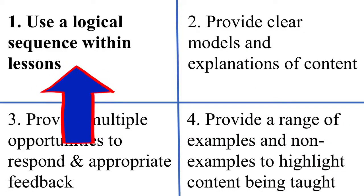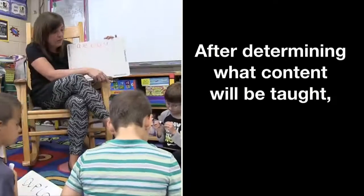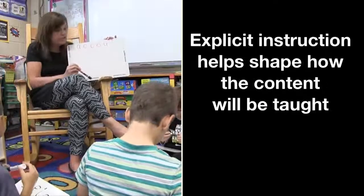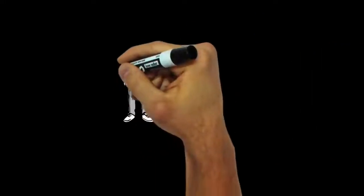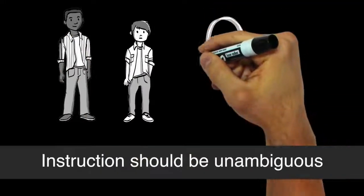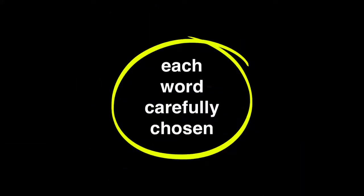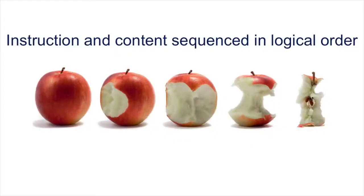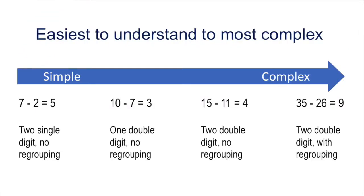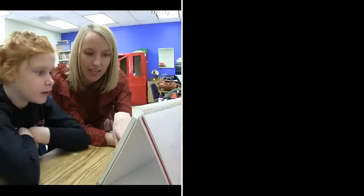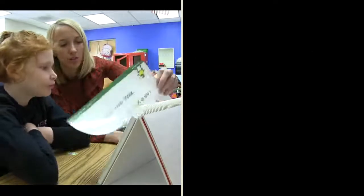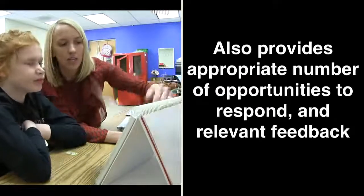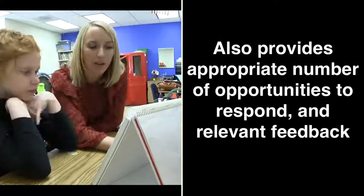Component 1: Use a logical sequence within lessons. After choosing the content, or what will be taught, Explicit Instruction shapes how the content will be taught. Teachers should begin lessons with an explicit statement of purpose and provide an advance organizer for the lesson. Content should be sequenced in a logical format, going from easiest to understand to most complex. In the following clip from a low-incidence disability classroom, Mrs. Raines explicitly tells her student what they're going to work on during the lesson, and also provides opportunities to respond and specific feedback.